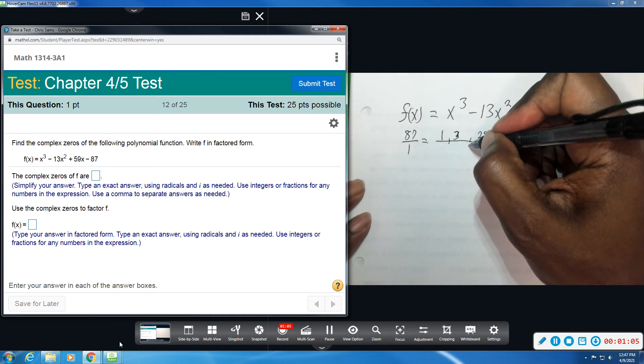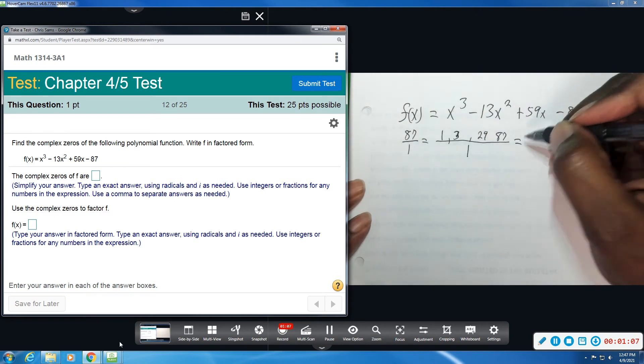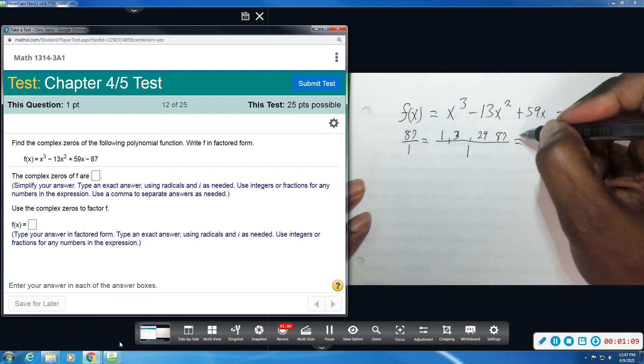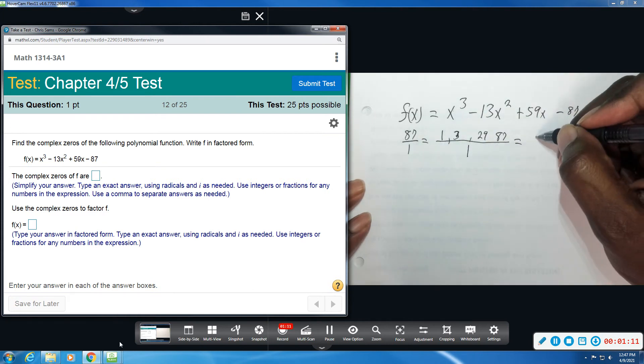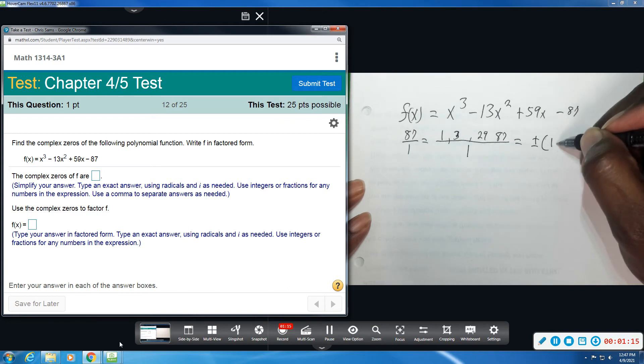Now on the bottom, the only factor of 1 is 1. So you divide each number on the top by what's on the bottom, and you have to remember positive or negative. So I'm going to list just positive or negative 1, positive or negative 3, positive or negative 29, positive or negative 87.